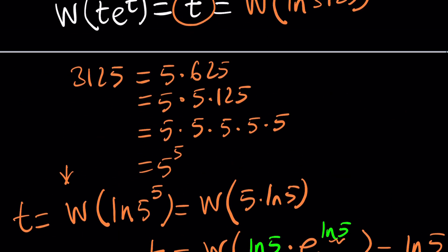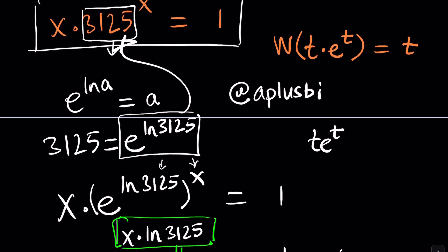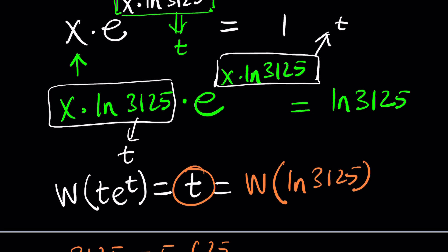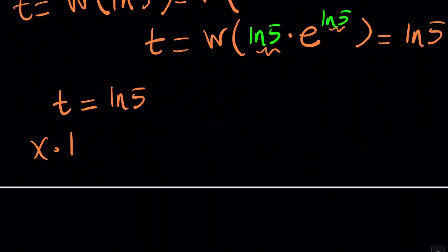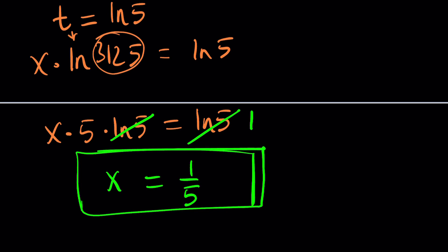But what is t? Let's go back and find out. t is x times ln 3125. x times ln 3125 is t, and that's equal to ln 5. How nice, because we now know that this is ln 5 to the 5th power, so it's going to be like x times 5 times ln 5 equals ln 5. And then if you go ahead and cancel out ln 5, you're going to end up with 1. And finally, divide both sides by 5, and you're going to get x equals 1/5 as the only solution, at least if you're looking for real solutions.